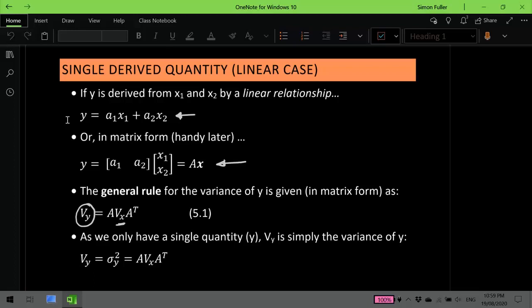Now, since we only have one quantity y, the variance-covariance matrix of y is a one-by-one matrix. And that simply is the variance of y. So this is a one-by-one matrix.